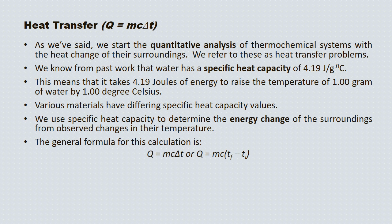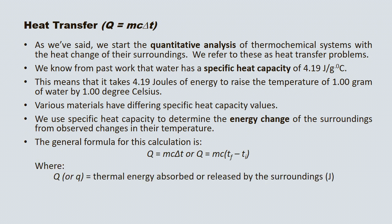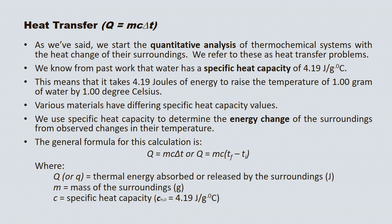The general formula for this work is Q = mcΔT, where Q is the thermal energy absorbed or released by the surroundings in joules, m is the mass of those surroundings, c is the specific heat capacity for those surroundings, and ΔT is the change in temperature. You'll see there's a slightly different way of expressing the equation — instead of ΔT, we use T-final minus T-initial.